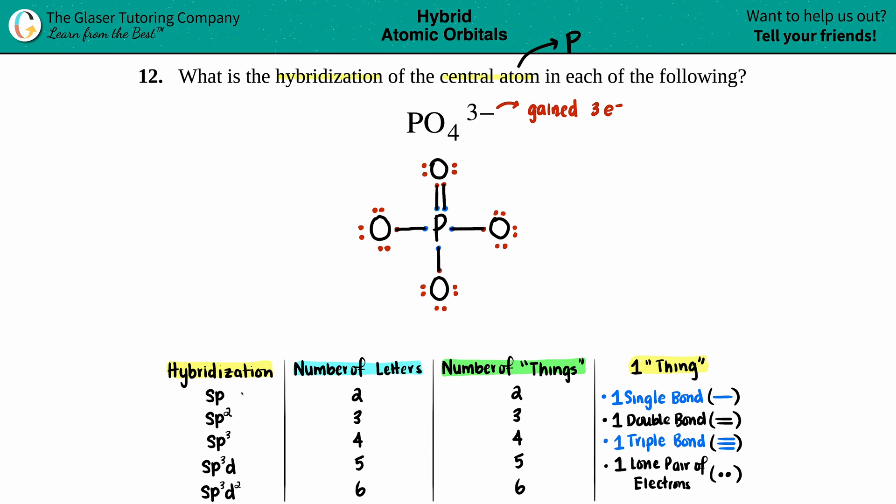Your teacher or professor might even be nice and make you only memorize the first three, but sometimes we got to memorize all five of them. But no harm because you could always classify them as the number of letters that they have. For example, sp is just an s and a p—that's two letters. sp² you have one s and two p's, so that's a total of three letters. You kind of get the gist here: sp³, that's one s and three p's, so that's a total of four letters.